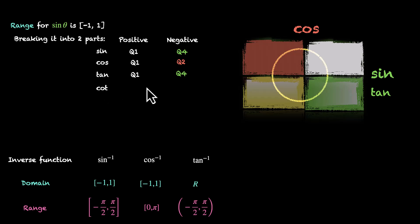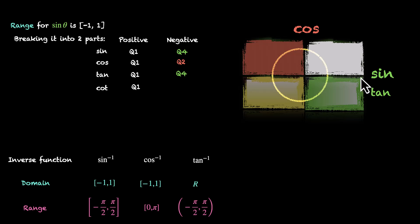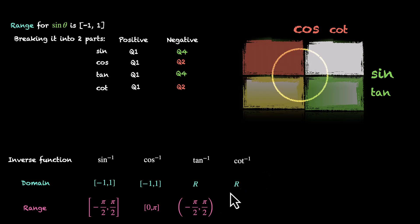Similarly, for cot inverse, the first quadrant gives us the positive values. For negative values, cot is cosine over sine, and we don't want sine to equal zero — which happens at x equal to zero. So we take Q1 and Q2 for continuity, just as we did for cosine. Cot inverse has domain R but range zero to π. We don't include zero and π in the range because that's where cot is not defined.